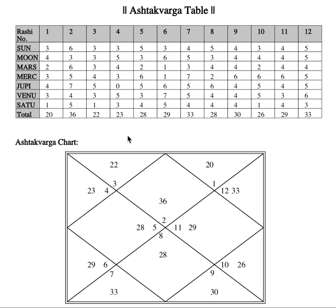When I say first house, go to Taurus. Here you can see Sun, Mars, and Jupiter have quite significant contributions. Mars has six points, which is quite impressive, and Jupiter has seven — the highest number of points — so Jupiter will contribute very much in the chart. Interestingly, in the third house, Cancer, Jupiter has zero points. This is very interesting.